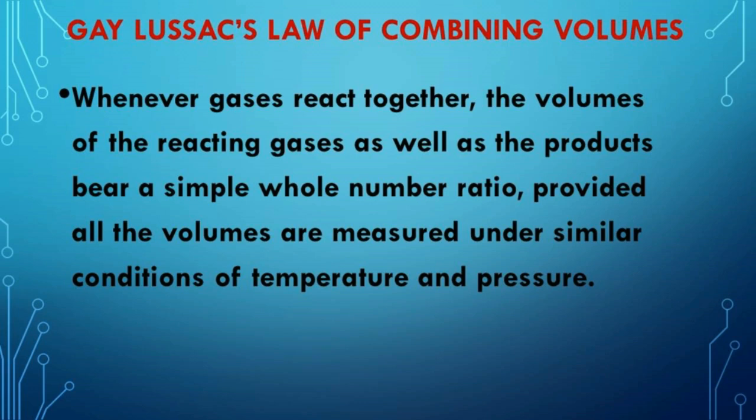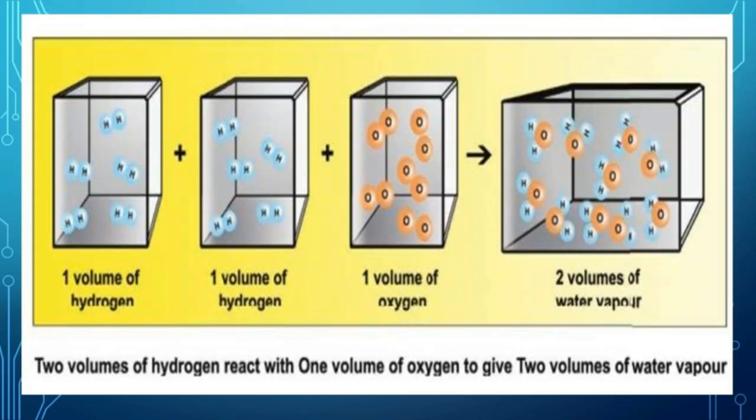Gay-Lussac's law of combining volumes states that whenever gases react together, the volumes of reacting gases and products bear a simple whole number ratio, provided all volumes are measured under similar conditions of temperature and pressure. For example, two volumes of hydrogen react with one volume of oxygen to form two volumes of water vapour — a ratio of 2:1:2.